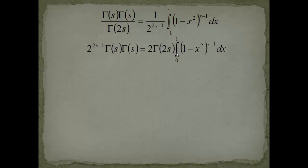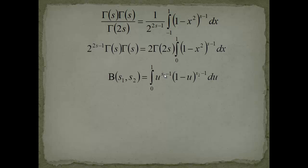From this step I multiplied 2 into the result, moved gamma of 2s to the right-hand side, and moved 2 to the 2s minus 1 to the left-hand side. To solve this integral, we use a substitution u equals x squared, so du equals 2x dx, and the integral runs from 0 to 1.